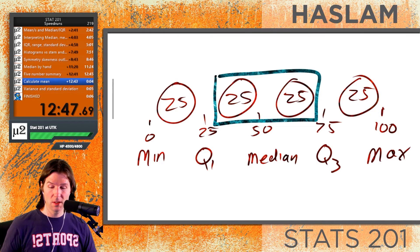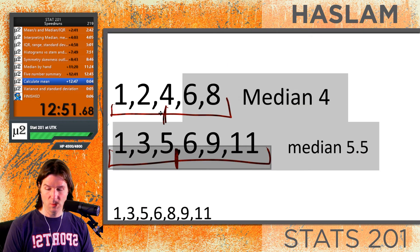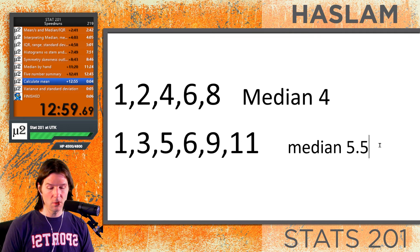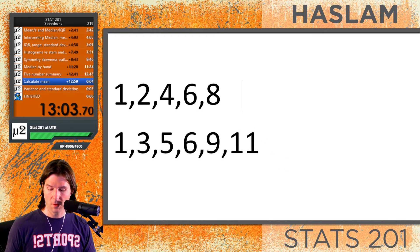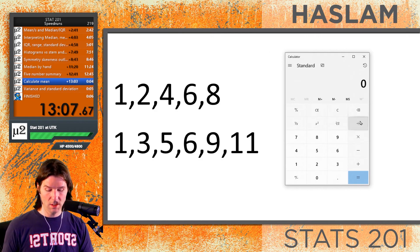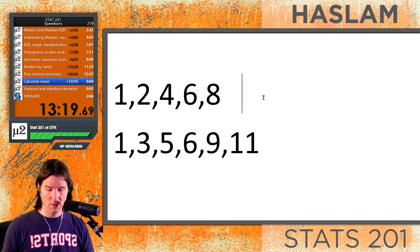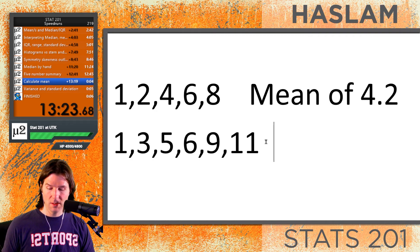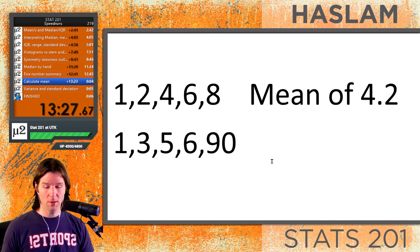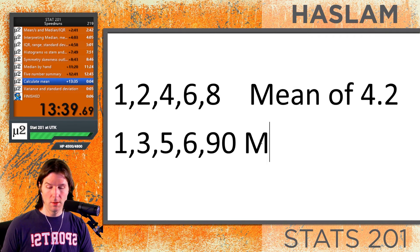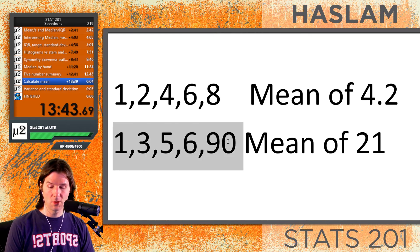To calculate the mean, take all the numbers, add them up, and divide by how many numbers there are. For 1, 2, 4, 6, 8 — that's 1 plus 2 plus 4 plus 6 plus 8 divided by 5, giving us 4.2. Now let's change the last number to 90, creating an extreme outlier. So 1 plus 3 plus 5 plus 6 plus 90 divided by 5 gives us 21. Notice how the data set mean is skewed in the direction of the outlier — the outlier inflates the mean.